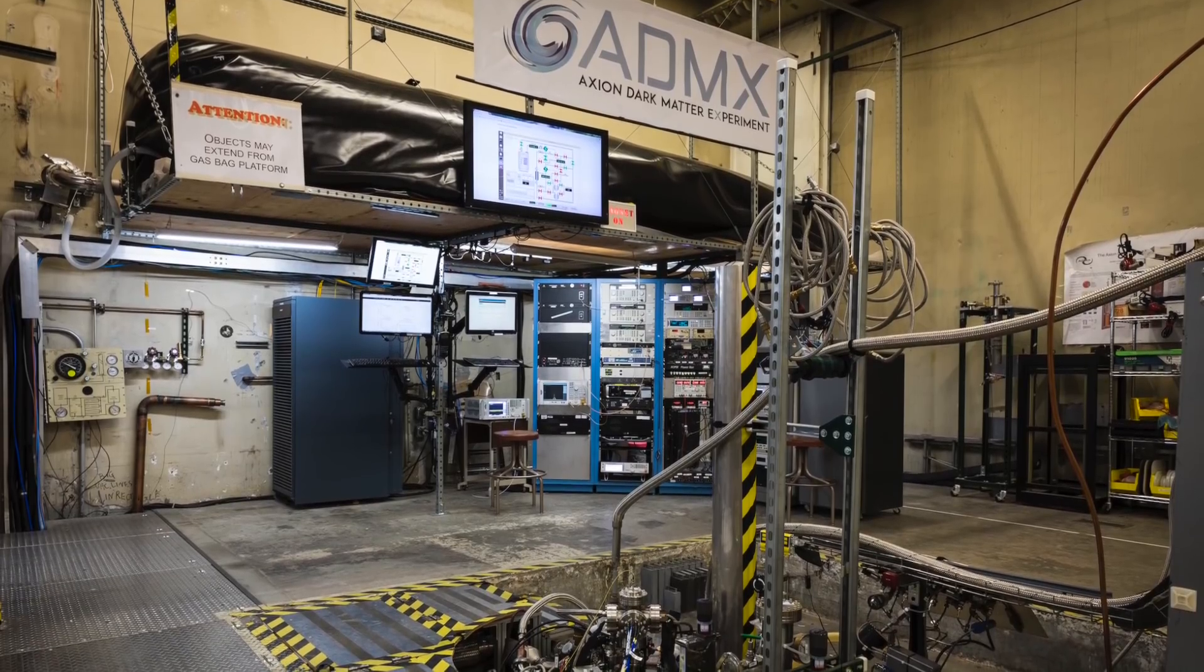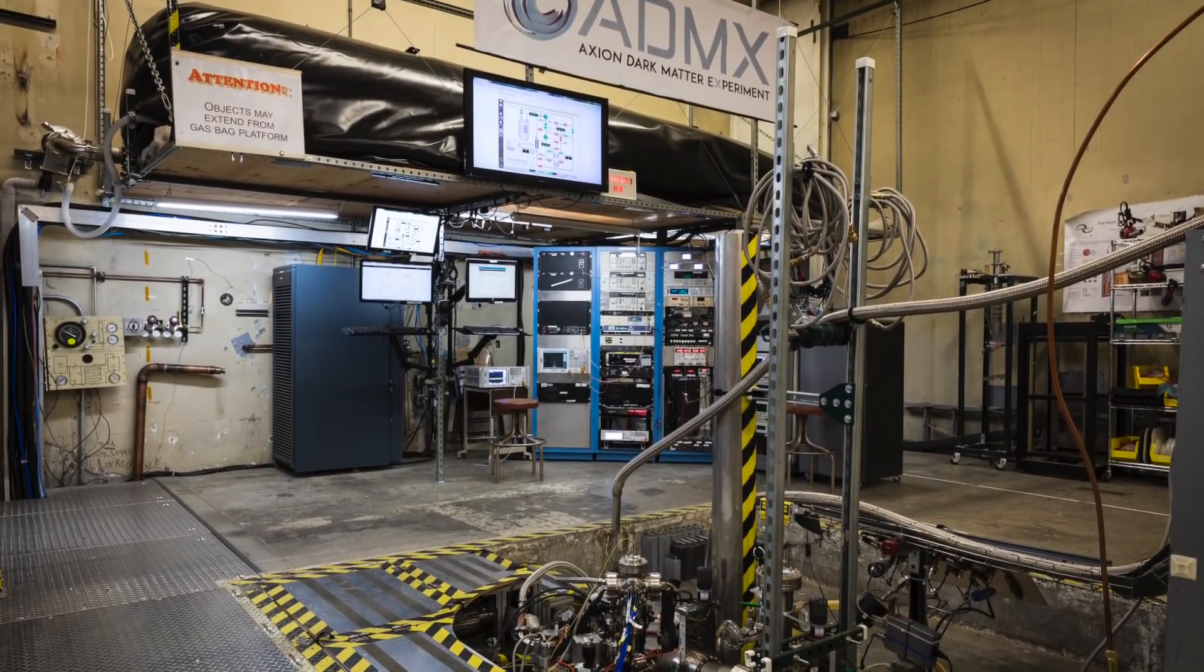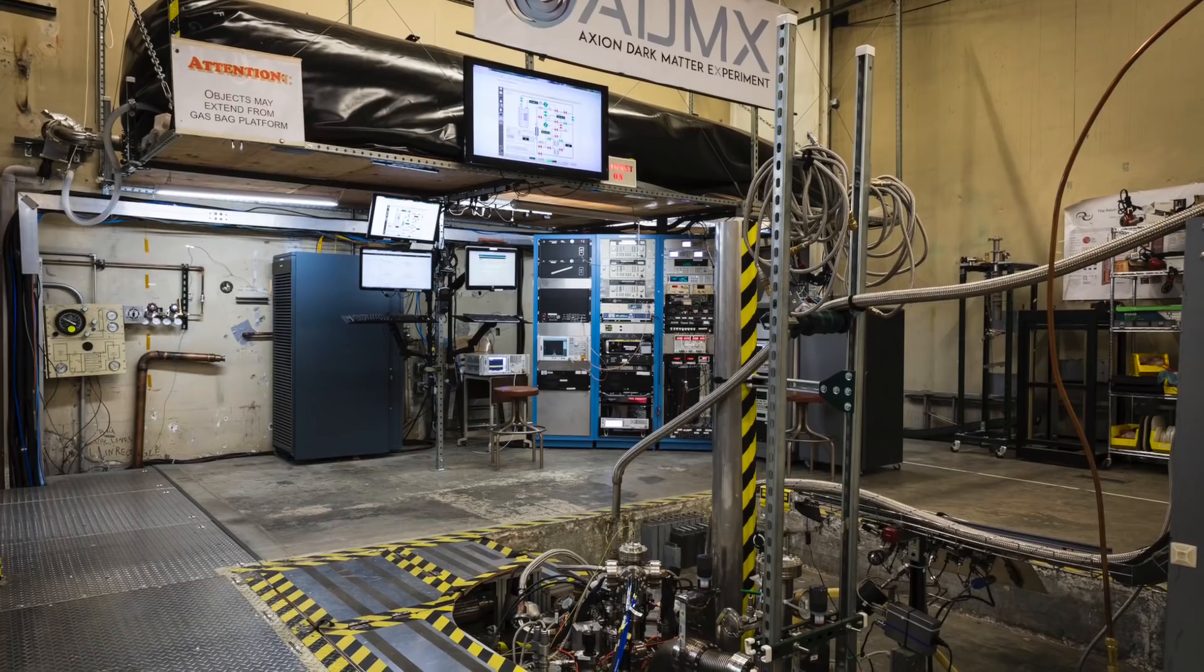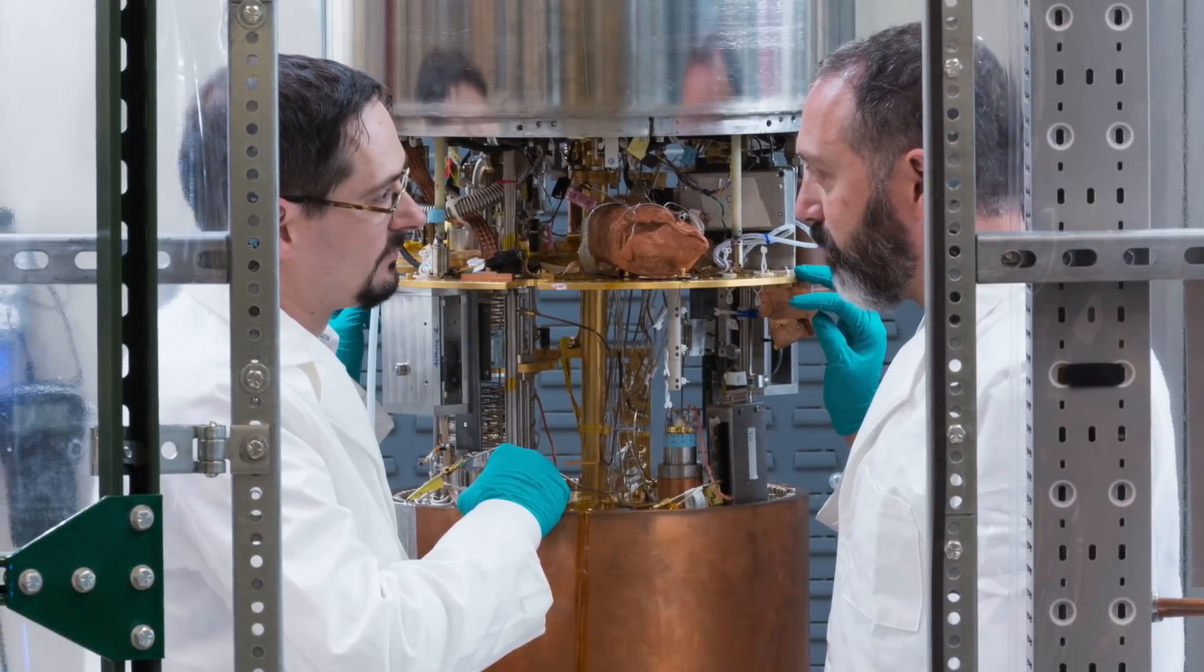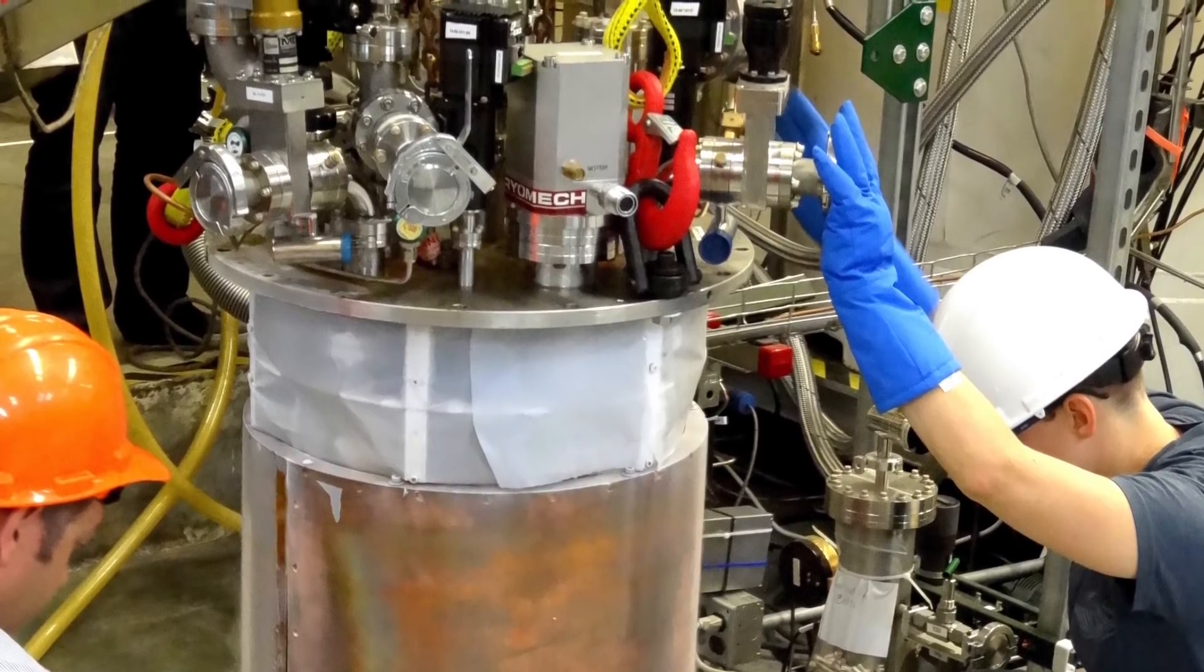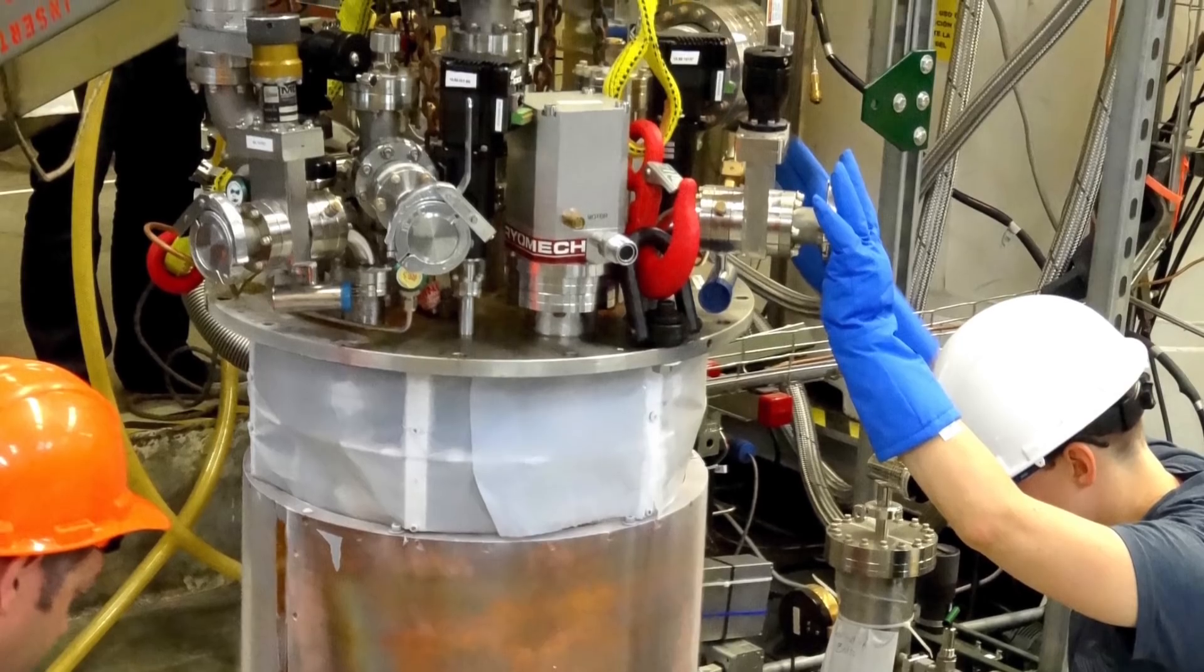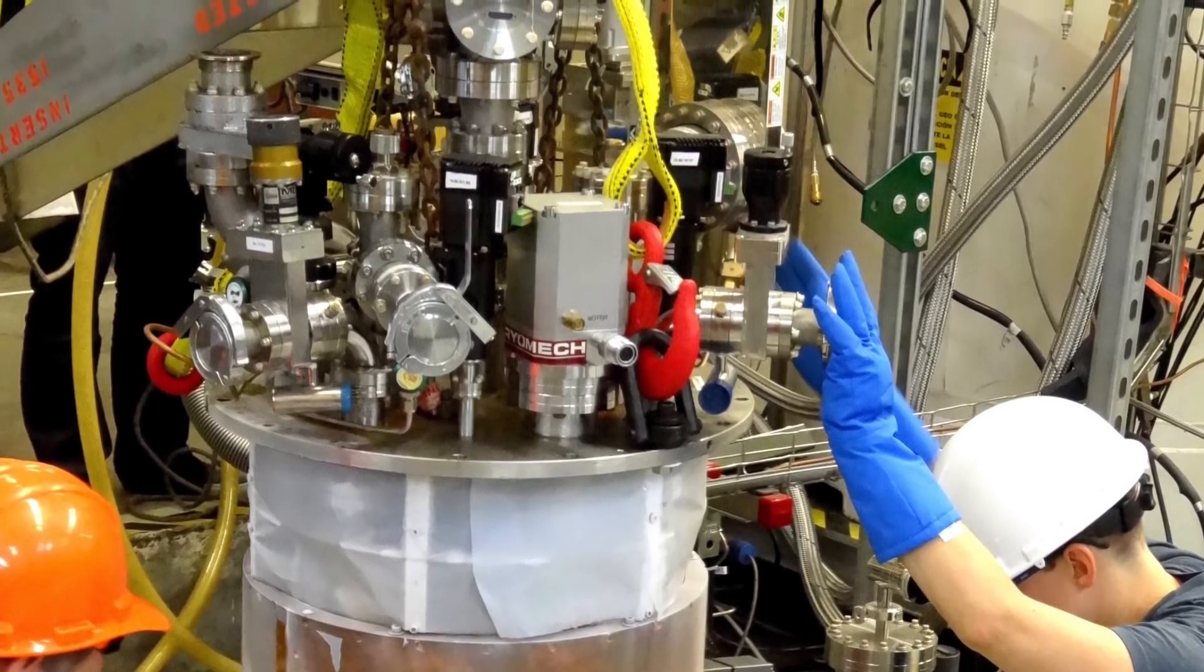So Fermilab scientists are participating in a collaboration called ADMX, short for Axion Dark Matter Experiment. This experiment uses a very strong magnet and a cavity that resonates at a certain microwave frequency. It's a bit like when you blow across the top of a 2-liter bottle and it makes the sound of a specific frequency, except of course it's microwaves and not sound.